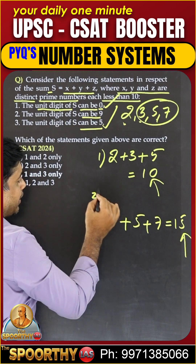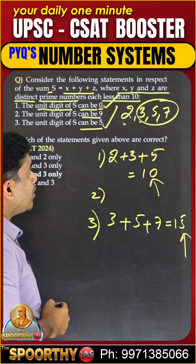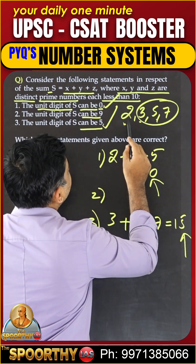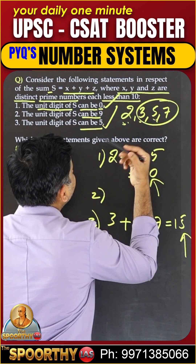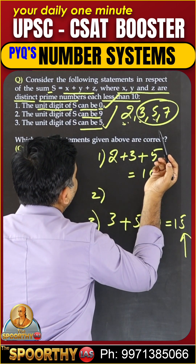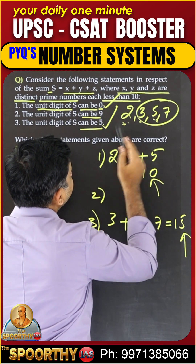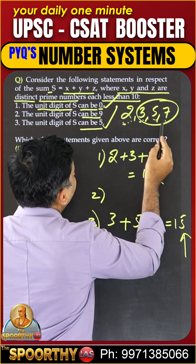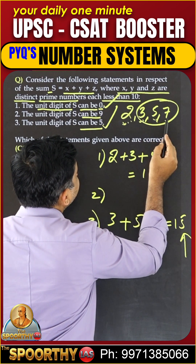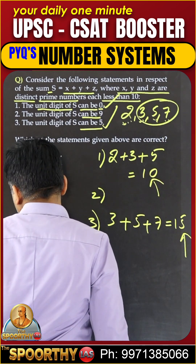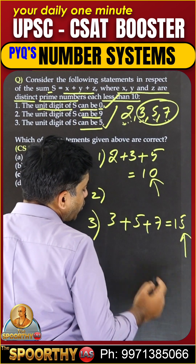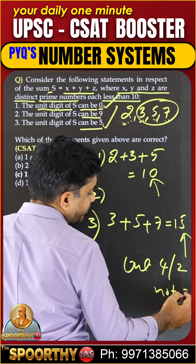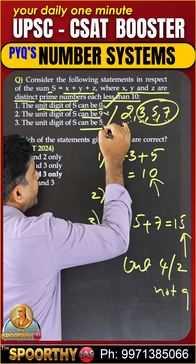What about the second one — can the unit digit be 9? Let us check. 2 plus 5 plus 7 equals 14, unit digit is 4, not 9. Try 2, 3, 7: 2 plus 3 is 5, plus 7 is 12, unit digit is 2. We are only getting unit digits 4 or 2, but not 9. So the second statement is false.